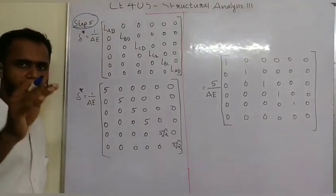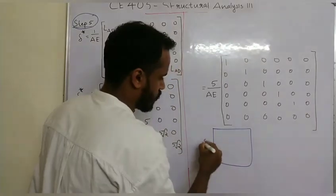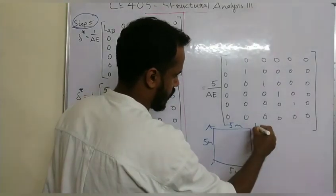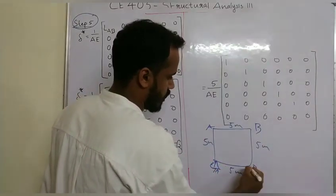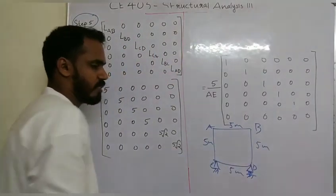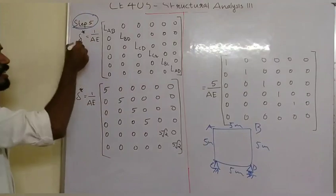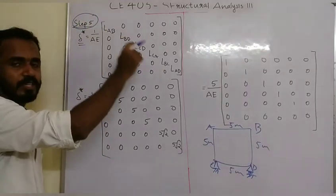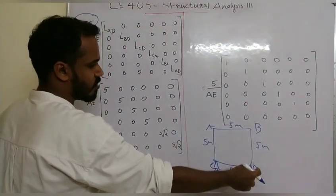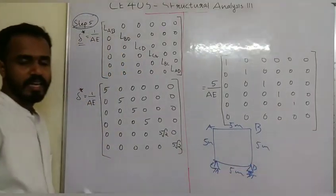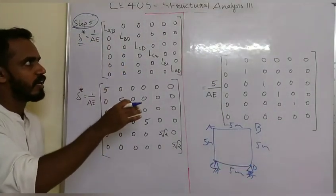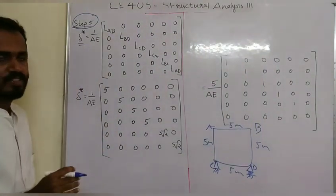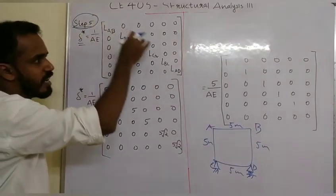How to use this: step 5 is to calculate delta star. I recall from the figure that the marked length is L — it is about 5 m. The members are AB, BD, DC, CA, BC, AD. The diagonal length is marked accordingly. So we form a 6x6 matrix, which is 1 by AE with corresponding lengths along the diagonal.